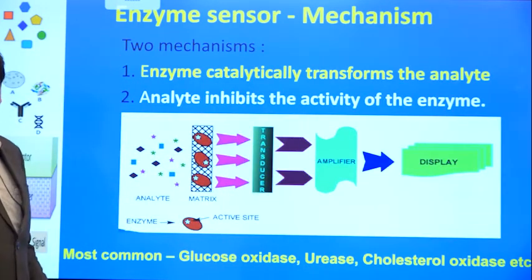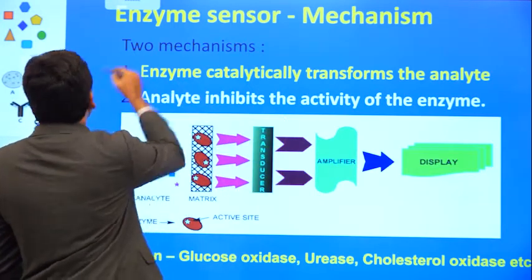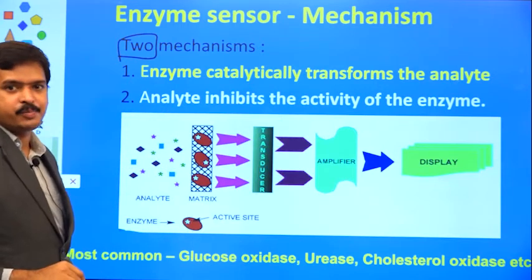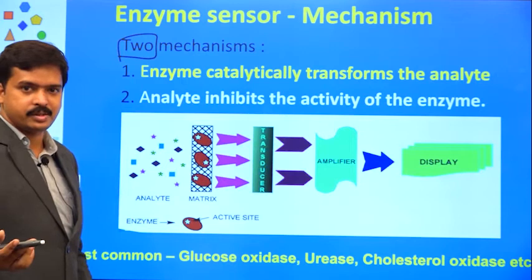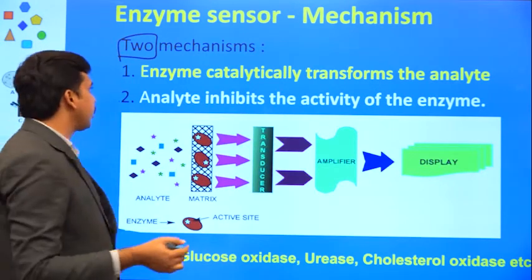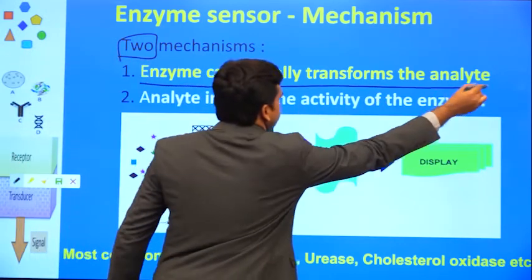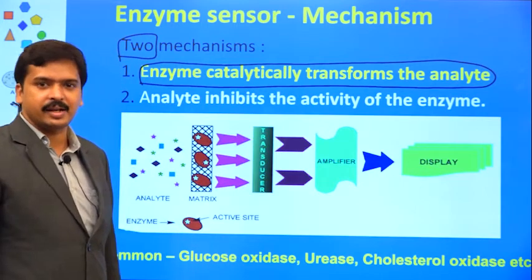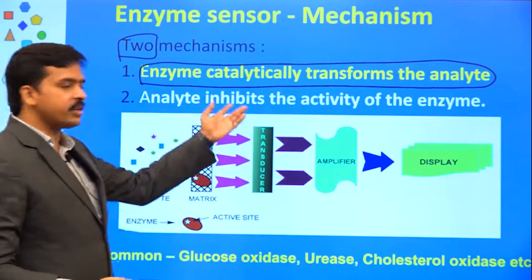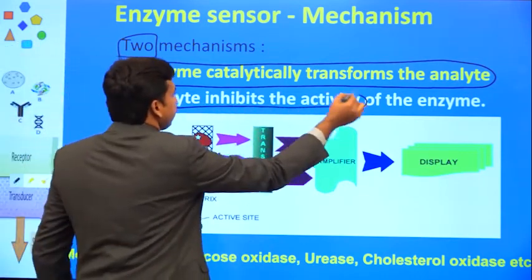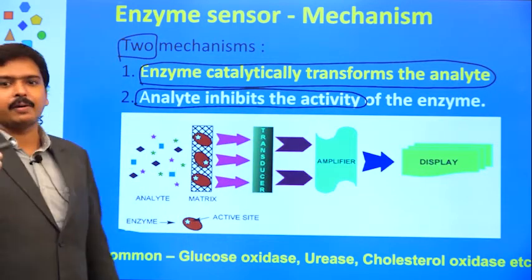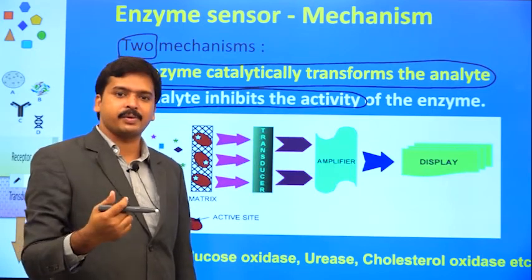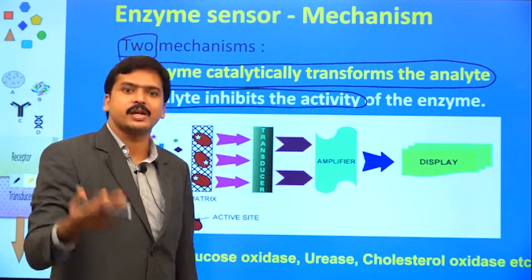There are two mechanisms by which an enzyme interacts with its substrate, after which the sensor detects a signal. Either the enzyme catalytically transforms the analyte — the regular process, where the reactant becomes a product and the analyte concentration changes — or the analyte inhibits enzyme activity. Sometimes when our biosensor is immobilized with an enzyme and you expose it to certain analytes, the enzyme loses its function. By losing its function, that is also a kind of signal.